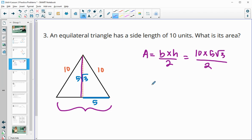So 10 times 5 is 50 square root of 3 for the top, divided by 2. 50 divided by 2 is 25. So 25 square root of 3 units squared would be our area.